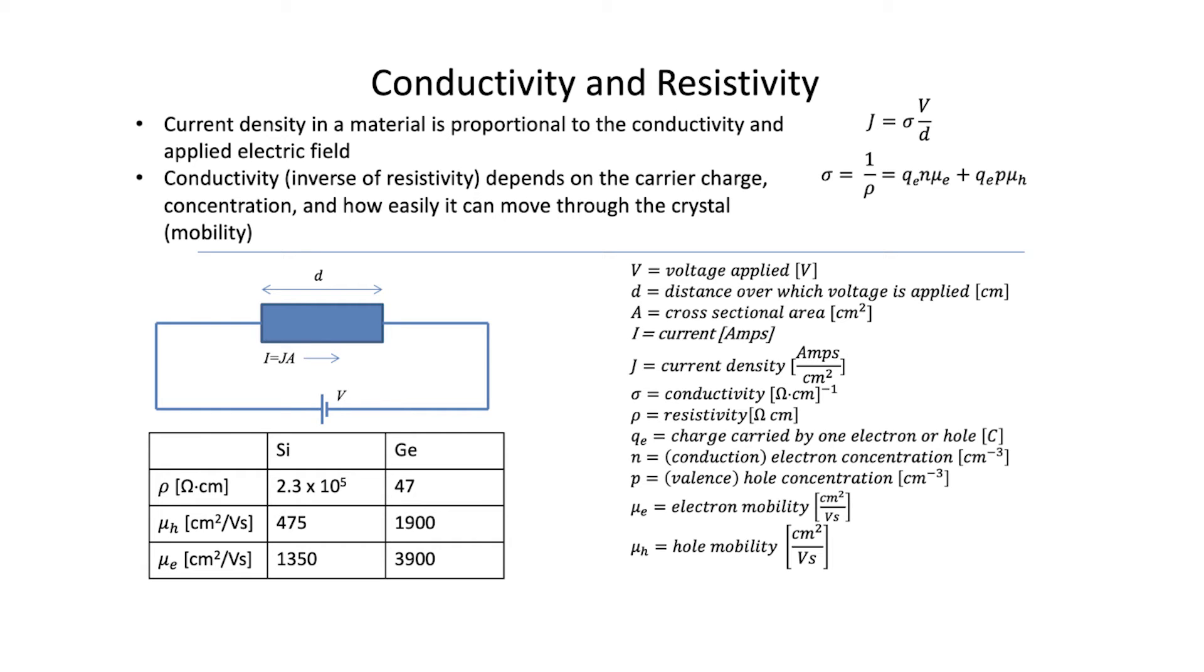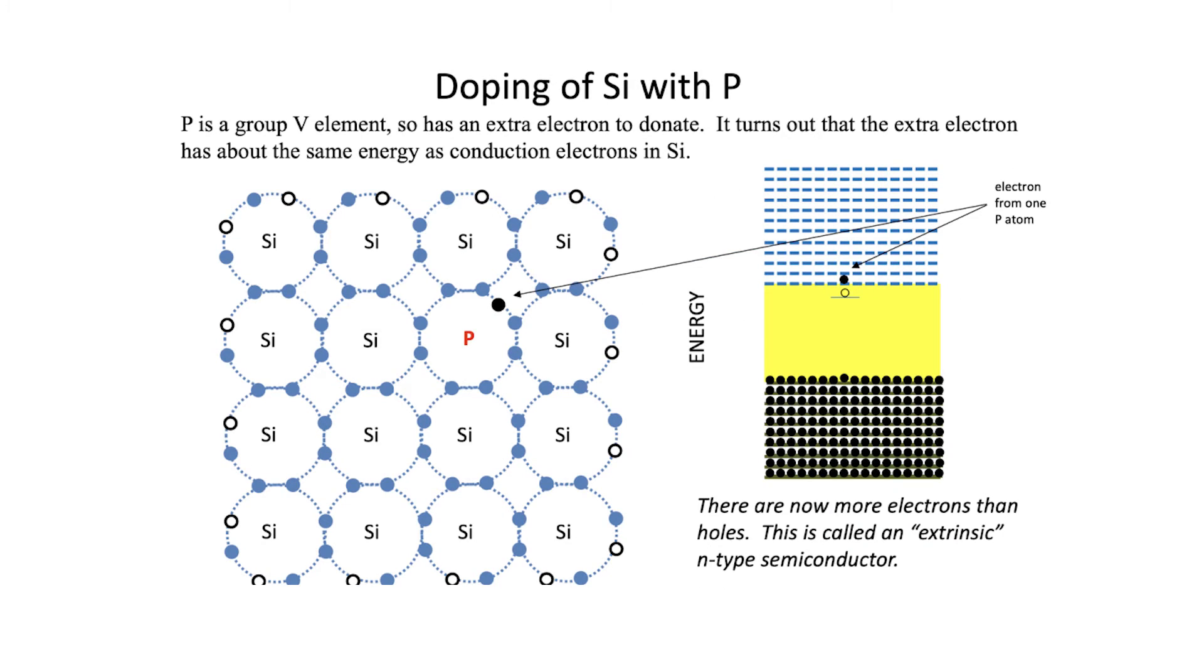Finally, the resistance R of a material is related to its resistivity, its cross-sectional area, and its length. Naturally, if you make a piece of material longer, the resistance is going to go up, because it's harder for the battery to push electrons through it. If the cross-sectional area is increased, well, then it's easier. So that's why area is in the denominator.